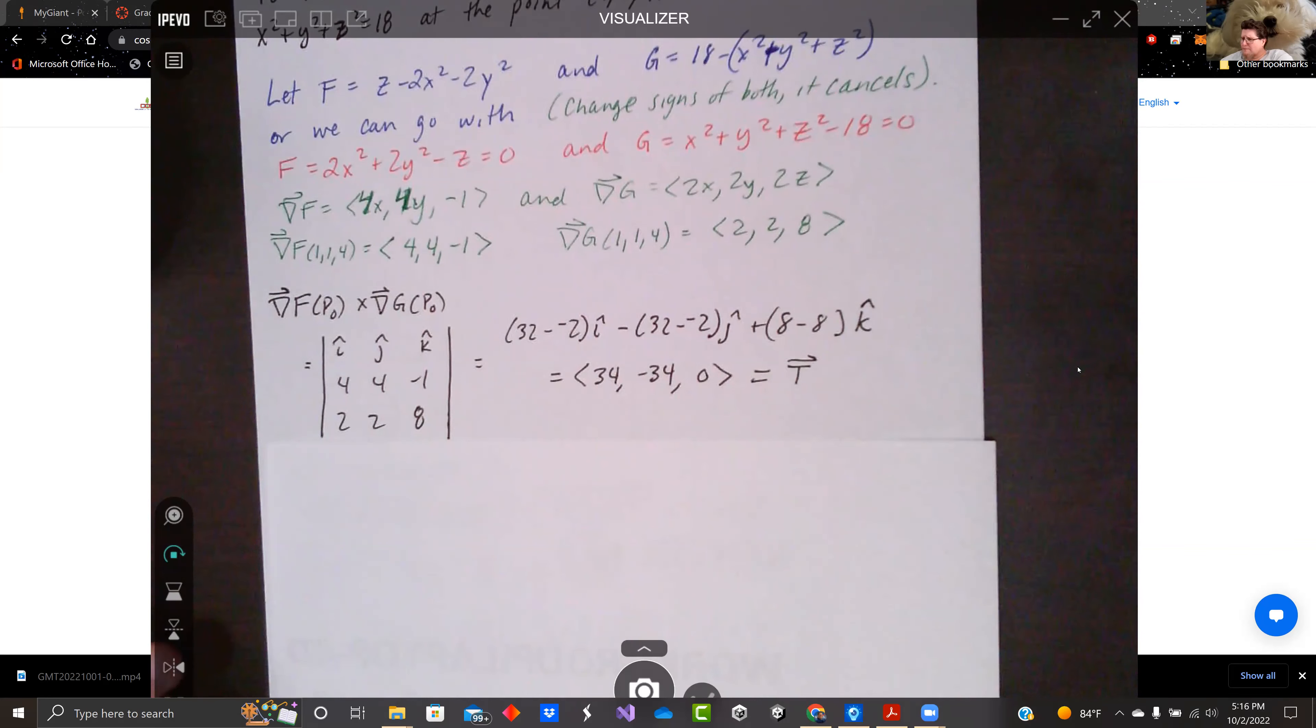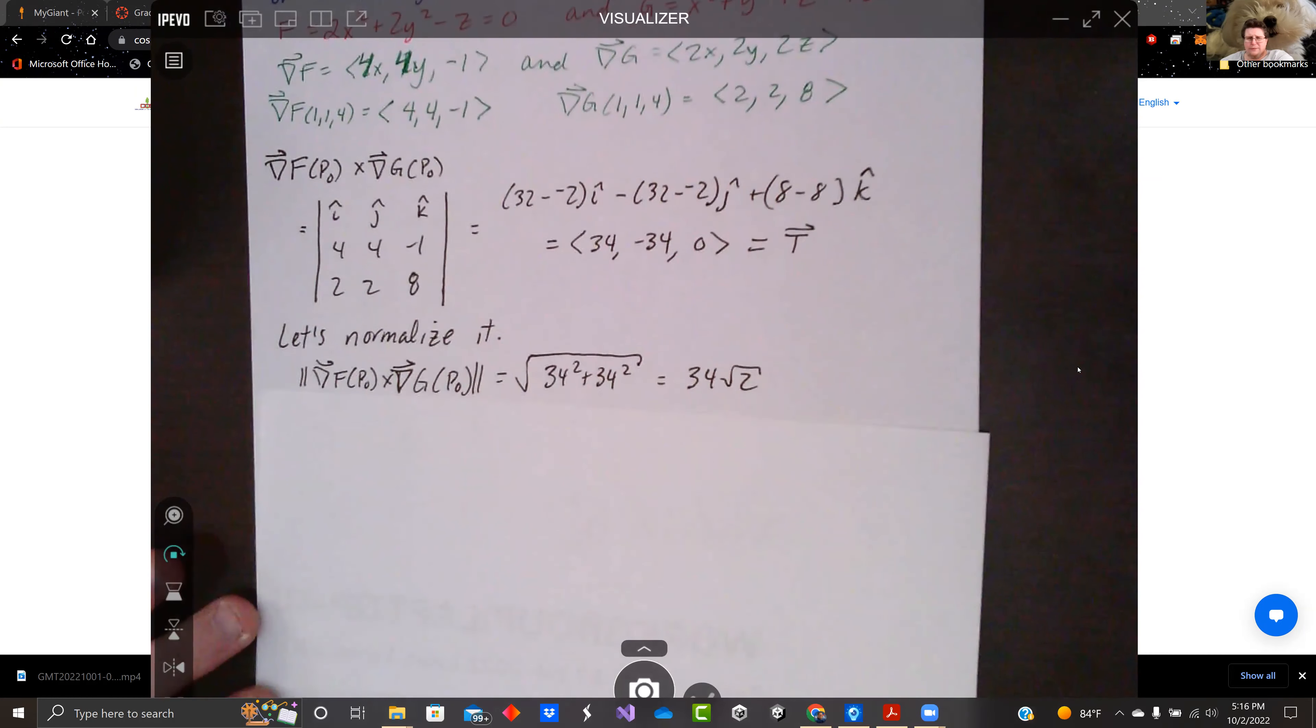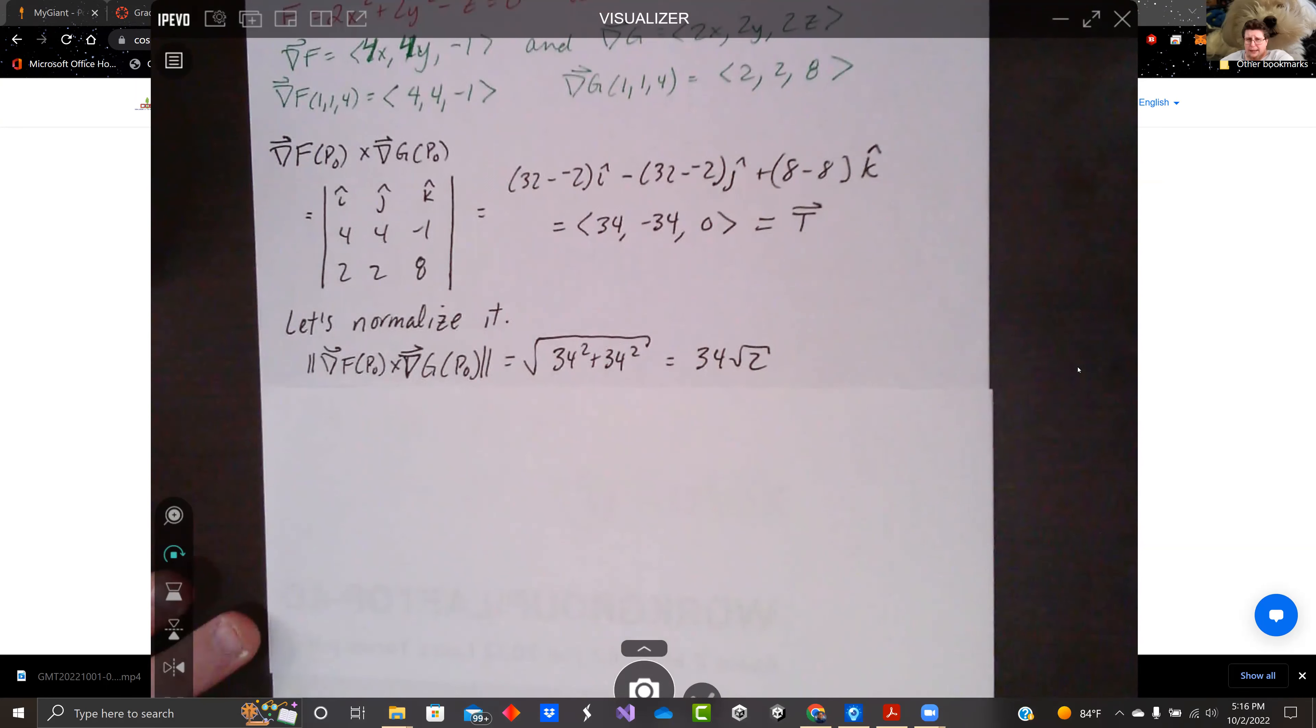And that's a tangent vector, but it's not a unit tangent vector. So we can normalize, find the norm of it, or the magnitude of it, and divide by it. So normalizing it, we find the magnitude, divide by the magnitude, and we get 1 over root 2, negative 1 over root 2, and 0. So now we've got a unit vector T.